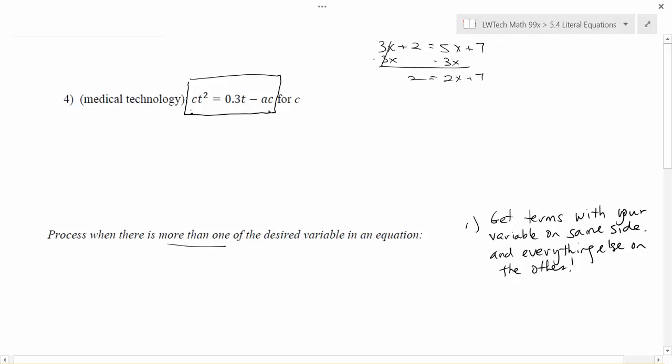So in this example here, notice I have a CT squared on the left, and I have the AC term on the right. We need to get those on the same side. I'm going to go ahead and move the AC term over. It's a minus AC right now, so if I add AC to each side, then I'll be able to move that across the equal sign.